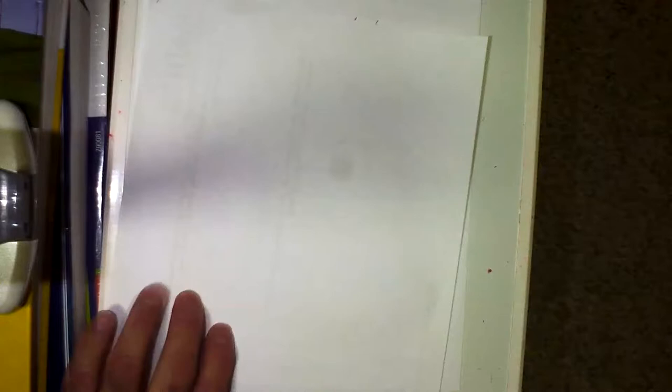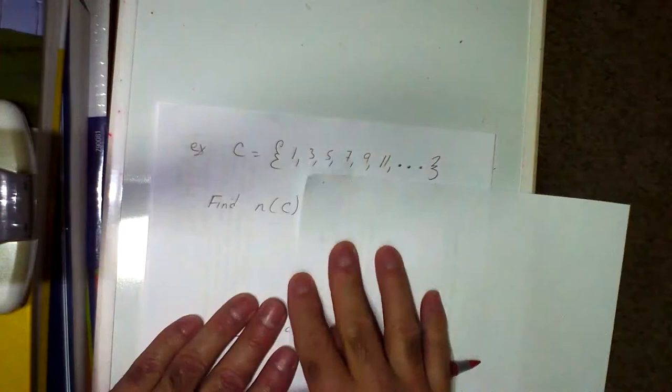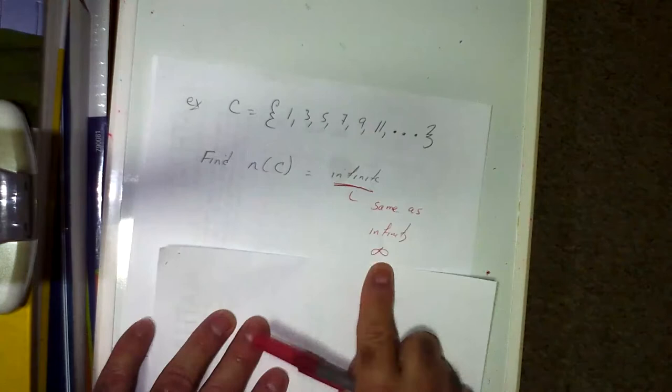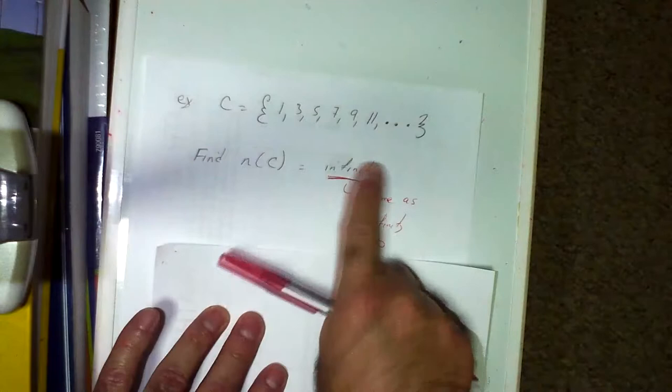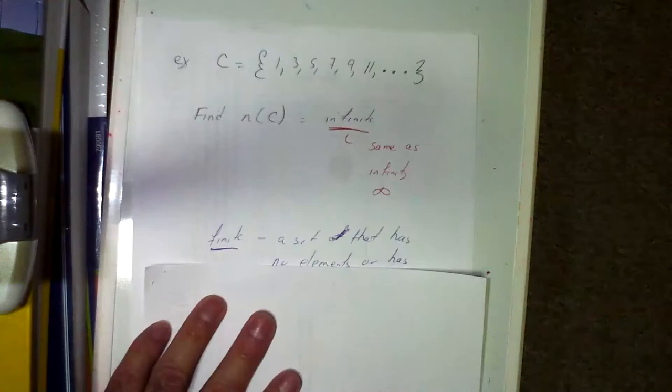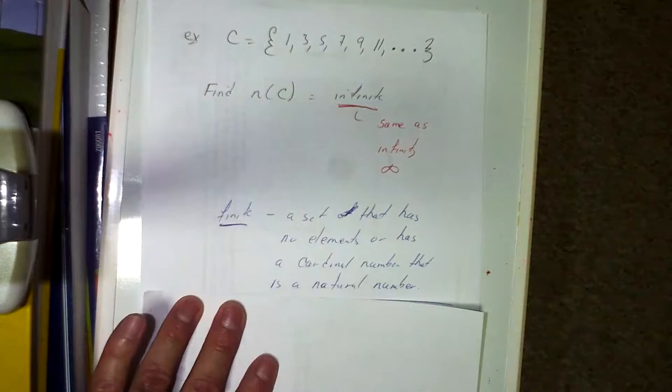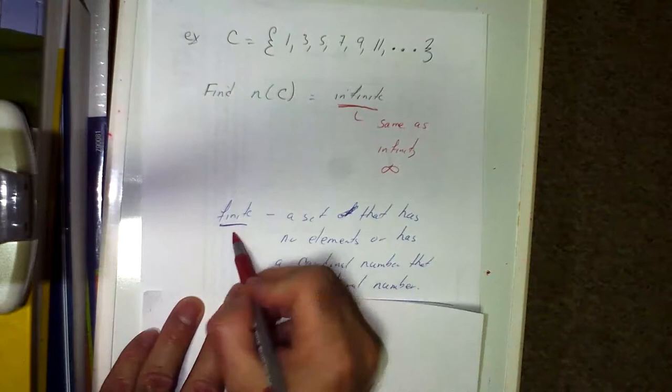Now suppose my set is {3, 5, 7, 9, 11, …} with dots. What is the cardinal number? It keeps going forever, so we say it is infinite. Finite is a set that has no elements or has a cardinal number that is a natural number. The previous problem with 8 elements is finite. But if it goes on to infinity, it is infinite.